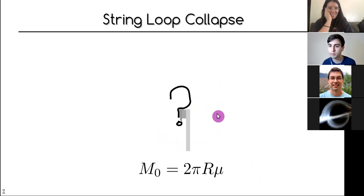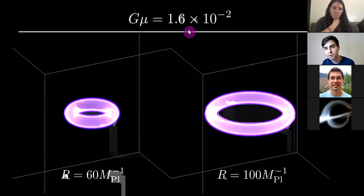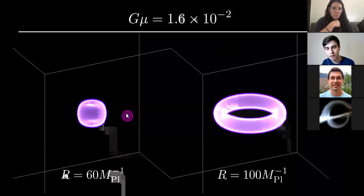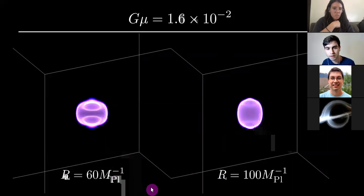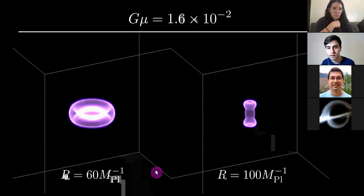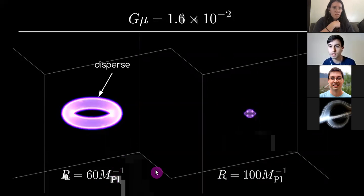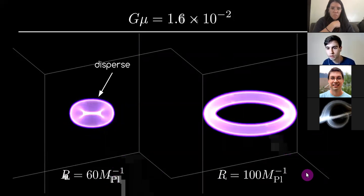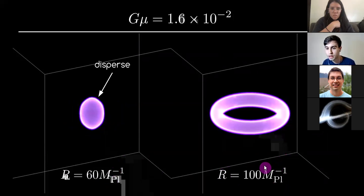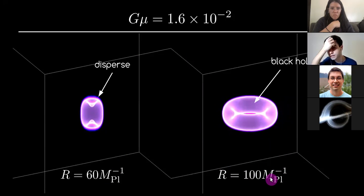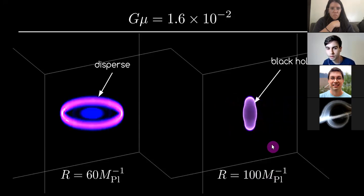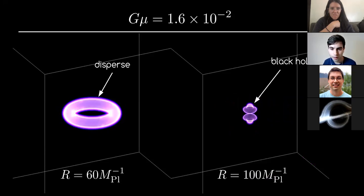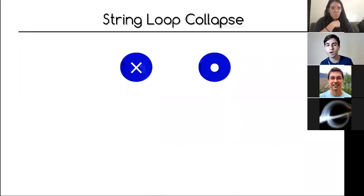Here are two simulations with the same string tension but different radii. The smaller loop collapses and the energy disperses — no loop remains, the energy has been radiated. In the larger loop, the radius is bigger so the loop is more massive, and everything falls within the event horizon — a black hole forms. So why does one case produce a black hole and the other doesn't?